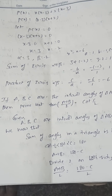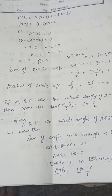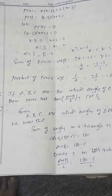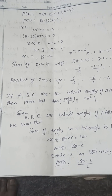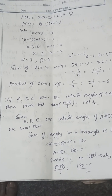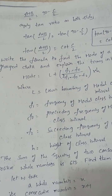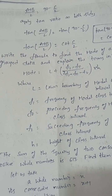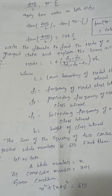If A, B, C are interior angles of triangle ABC, prove that tan((A+B)/2) = cot(C/2). Since A + B + C = 180°, we have A + B = 180° − C. Dividing by 2: (A+B)/2 = 90° − C/2. Applying tan to both sides: tan((A+B)/2) = tan(90° − C/2) = cot(C/2).